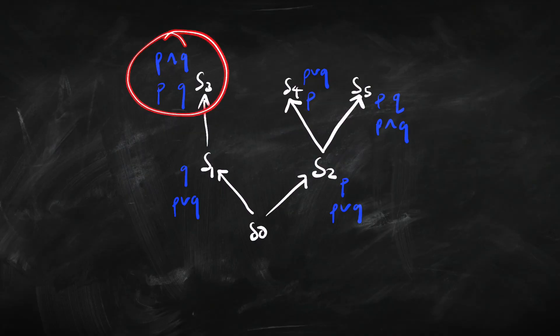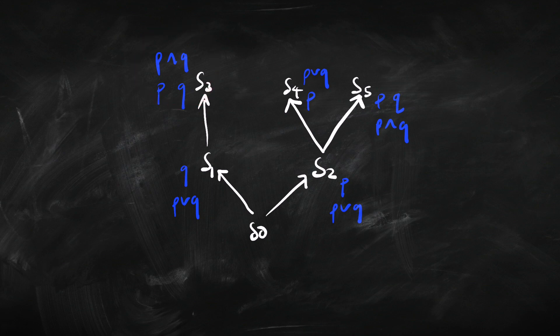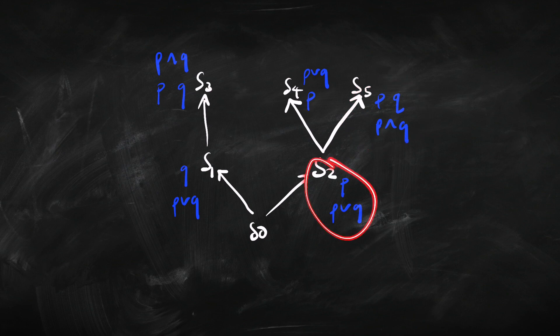We build up from what we know at a particular state into more complex information. Where we discovered both P and Q, we count that as discovering P and Q. Where we only got P, we can't say P and Q, but we can say P or Q. So conjunction and disjunction at a particular stage behave in a very classical way: if you've got both P and Q, you've got P and Q; and if you've got one of them, you've got P or Q. What about the arrow and negation? Those are going to be trickier.